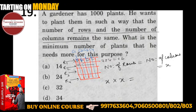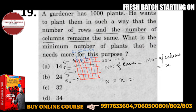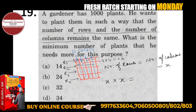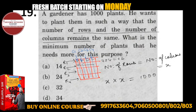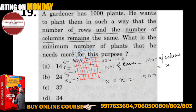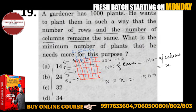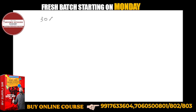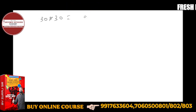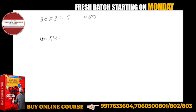But we have only 1000 plants, and we need some more. A gardener has 1000 plants — getting my point? Now, x into x must be at least 1000. If you try 30 into 30, you get 900 — that's less than 1000. If you try 40 into 40, you get 1600 — that's more than 1000.